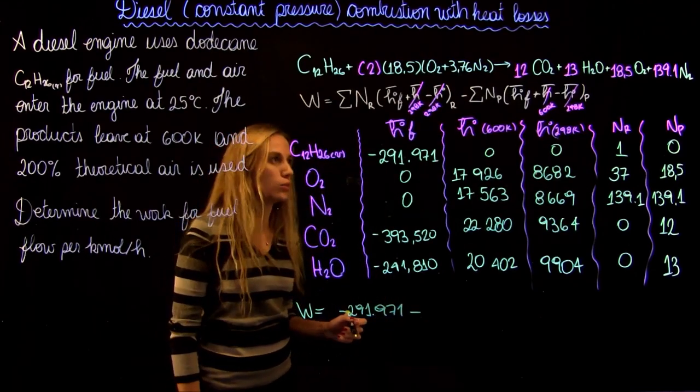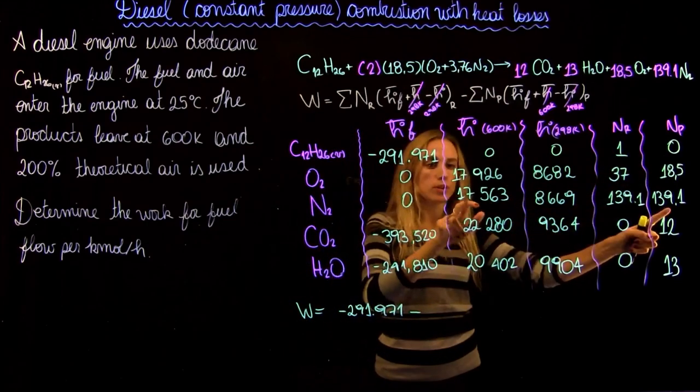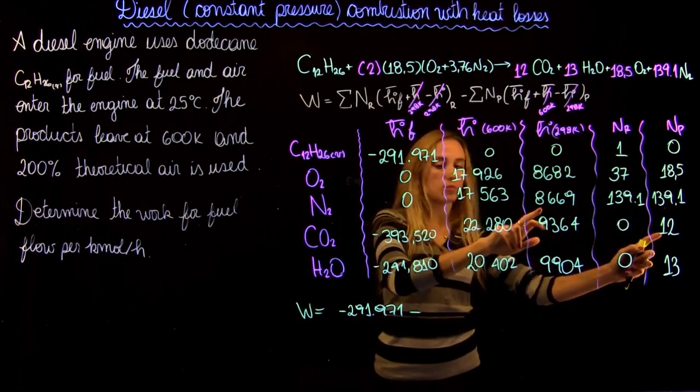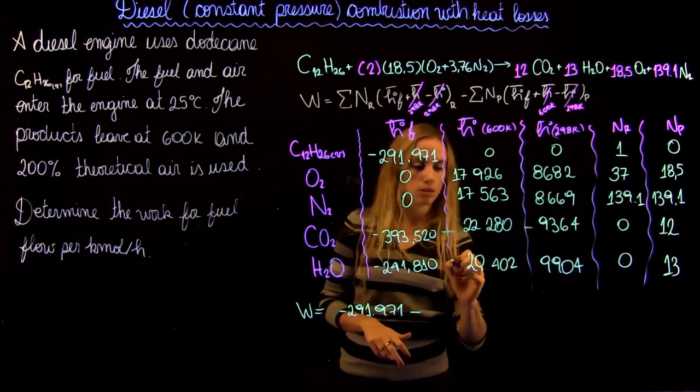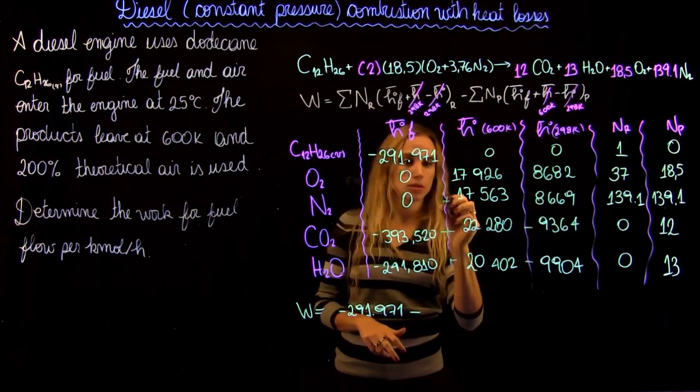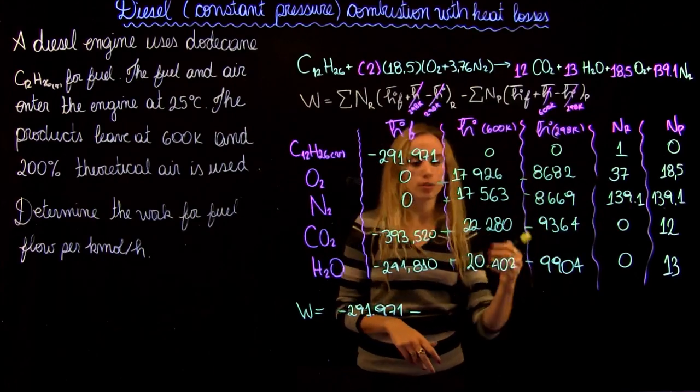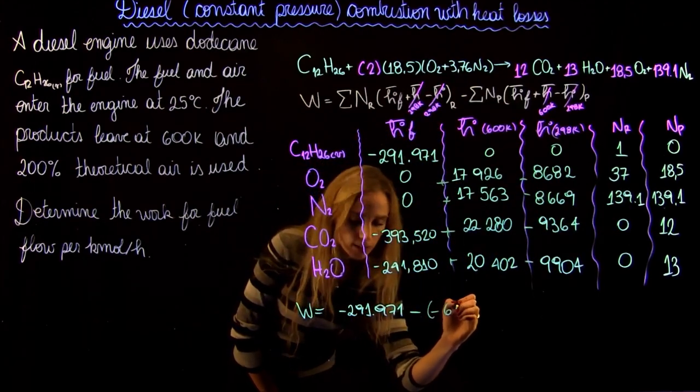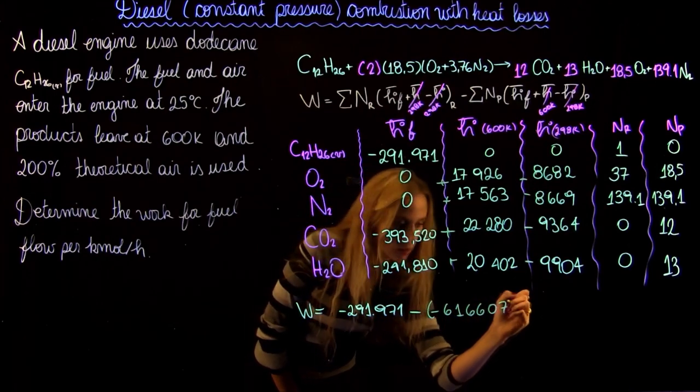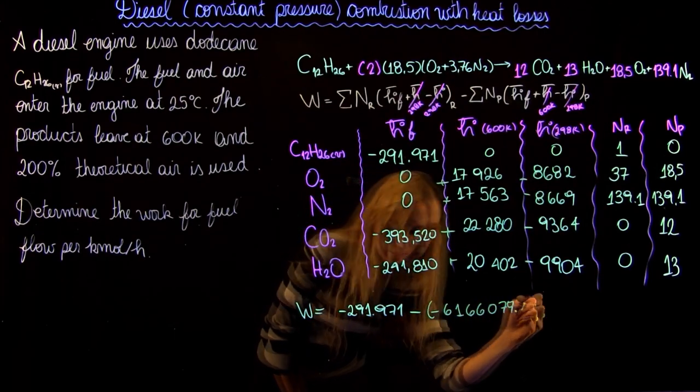And then for the product, what we have to do is we do this number times this minus this times 12 plus this plus this minus this for the products. And then we're going to find it's going to equal minus 6166079.1.